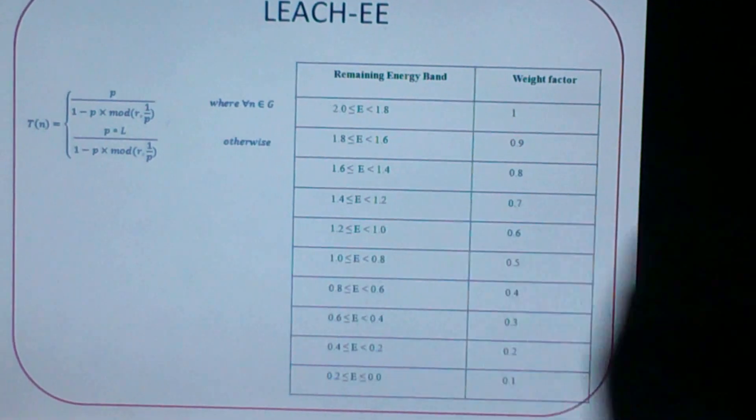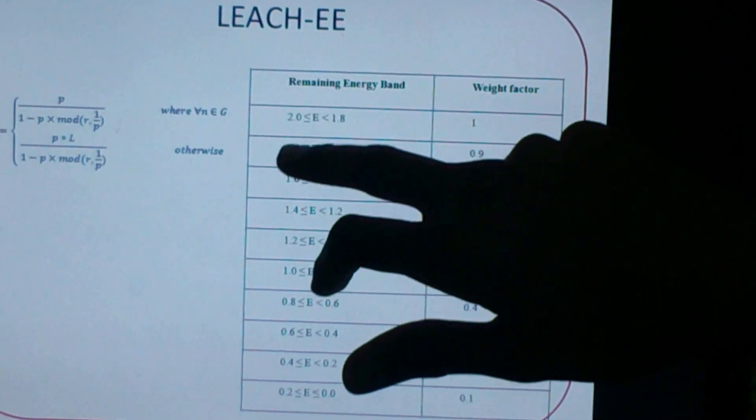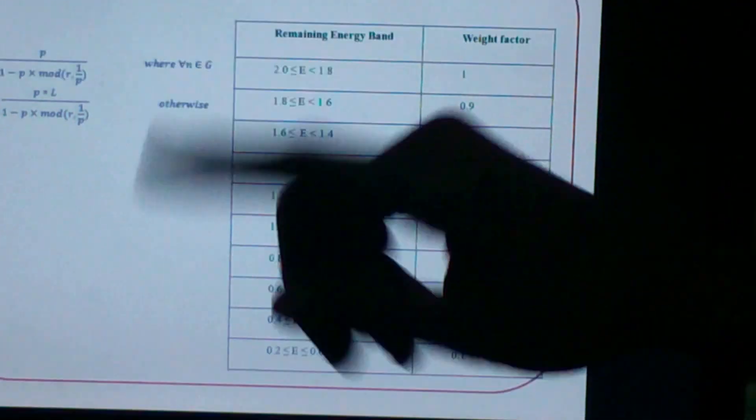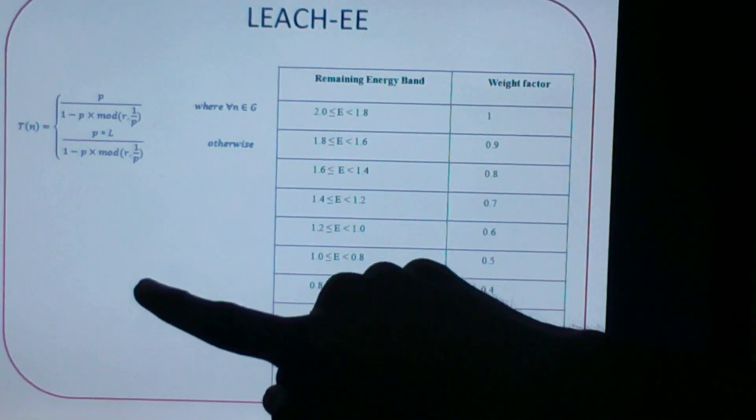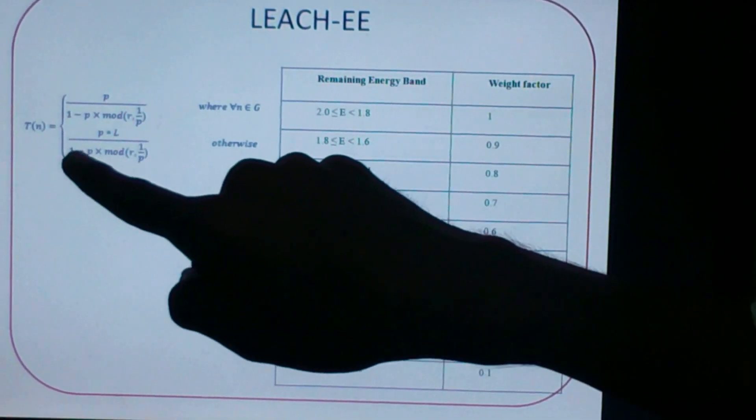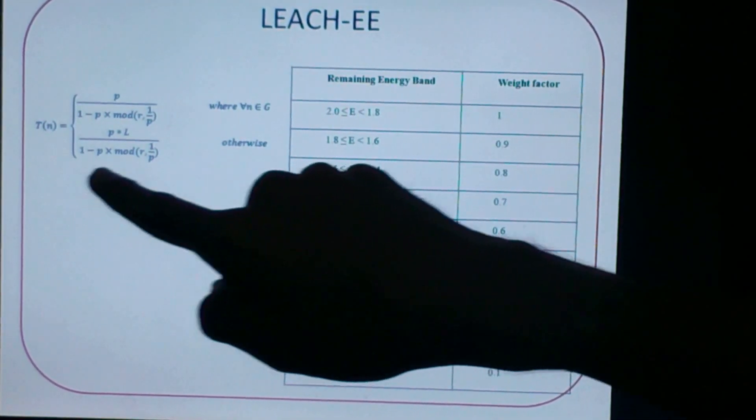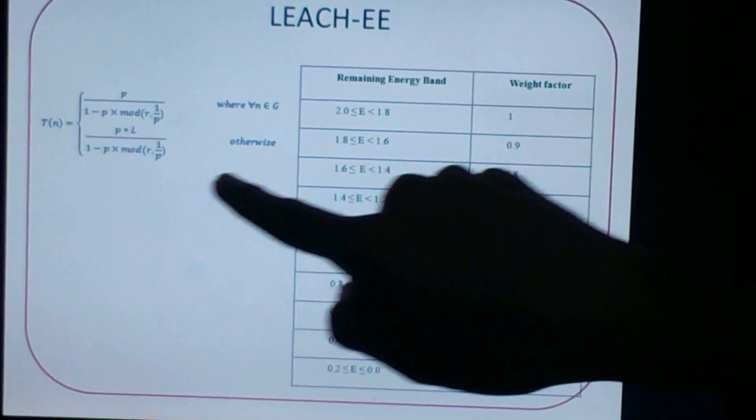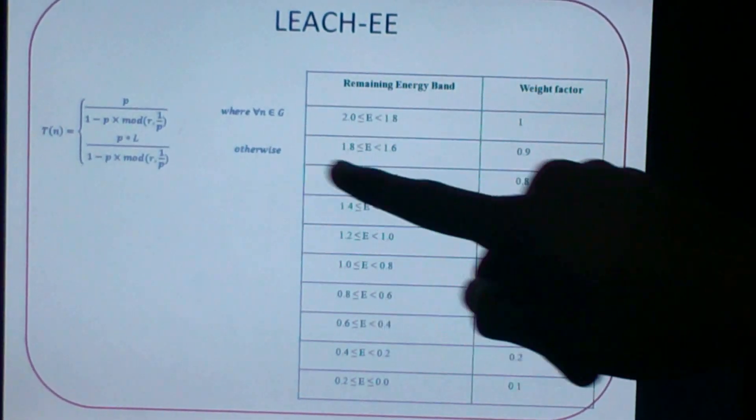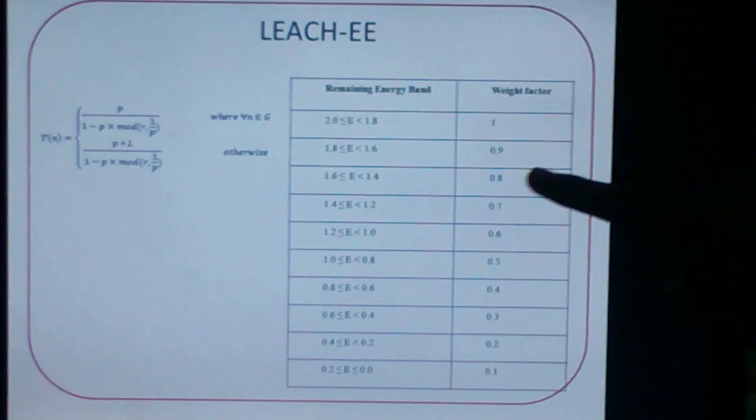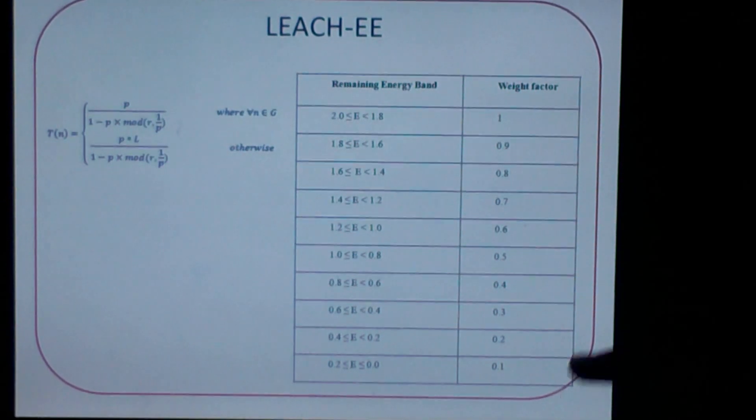If the node became the candidate in a previous round, it will be assigned the weight factor and also be the candidate for the current round with the thresholding function P into L upon 1 minus P mod R 1 by P. Here, the different thresholding function. The weight factor is assigned by the energy of a node and these are the weight factors of LEACH Double E.